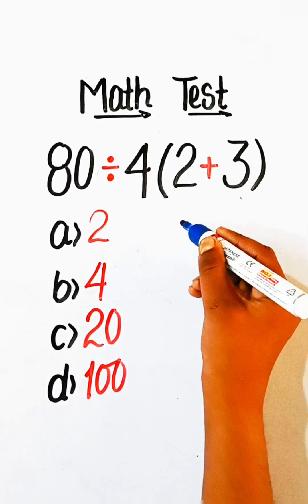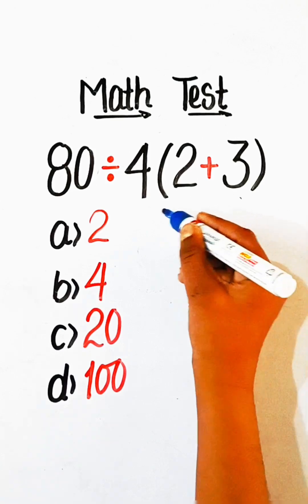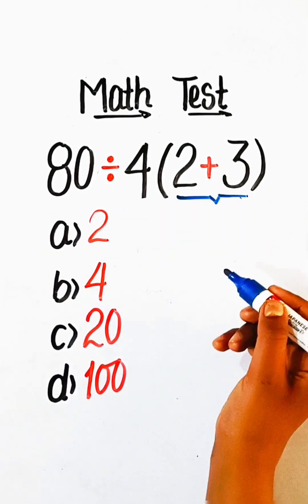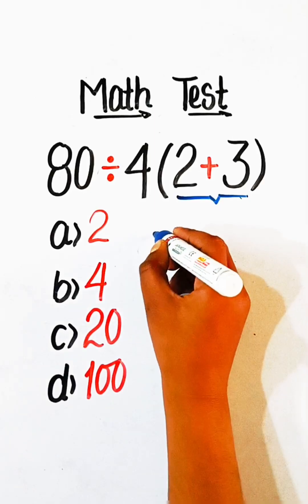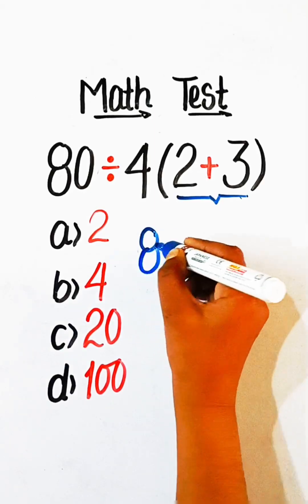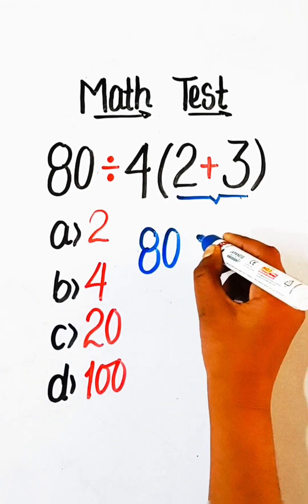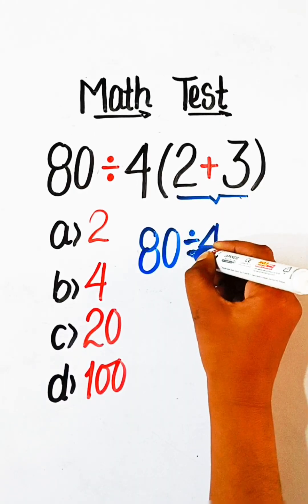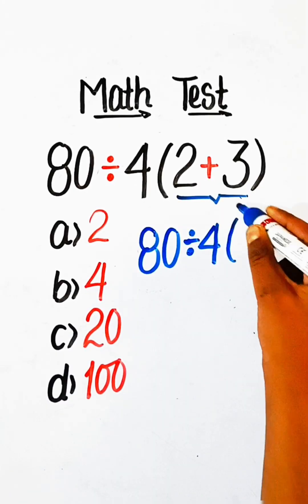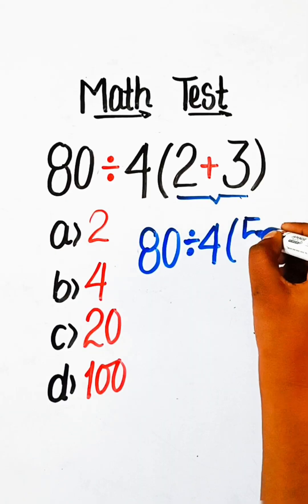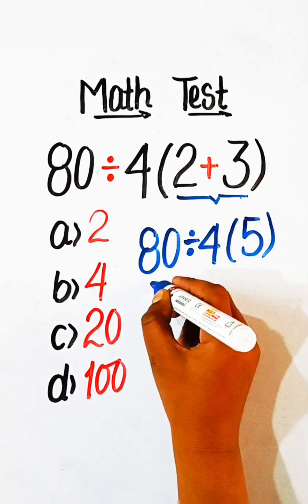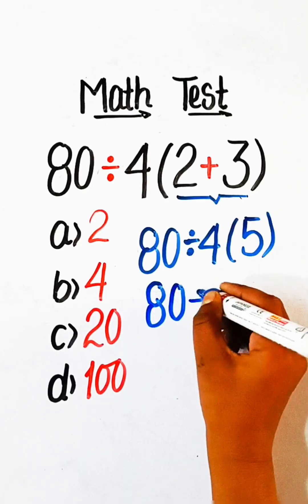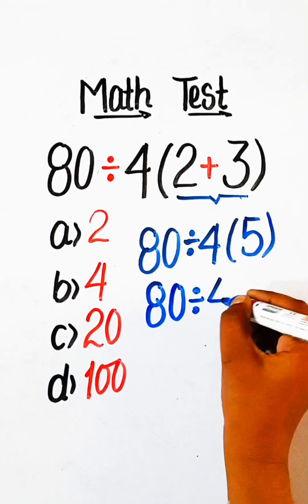So let's solve it together. First we have to solve the bracket part. 80 divided by 4, and inside the bracket 2 plus 3 is 5. So we have 80 divided by 4 multiplied by 5.